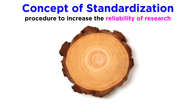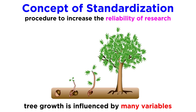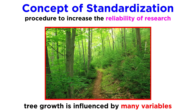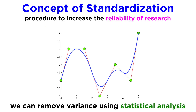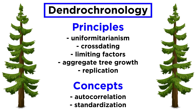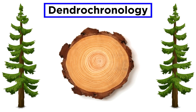Lastly, the concept of standardization is a procedure used to increase the validity and reliability of research — here referring to the standardization of tree ring data. While dendrochronologists primarily measure rings, tree growth is influenced by many variables, and perhaps most strongly by the biology of the species and the immediate environment in which it lives. This is especially true for the history of dense forests. The concept of standardization allows researchers to remove variants using sophisticated statistical analyses, such as splines or negative exponential curves. And with that, we have introduced the major principles and concepts of dendrochronology. With these understood, we are ready to move forward and discuss the structure and growth of wood.